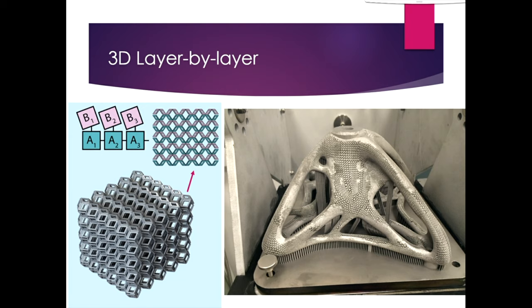Additive manufacturing is different from normal manufacturing, which is often a process where you take away material — so called subtractive manufacturing. Milling is one of these processes where you start out with a lump of metal and you then start removing material. Additive manufacturing is different in that we add material layer by layer, directly from CAD data, so there's very little human intervention.